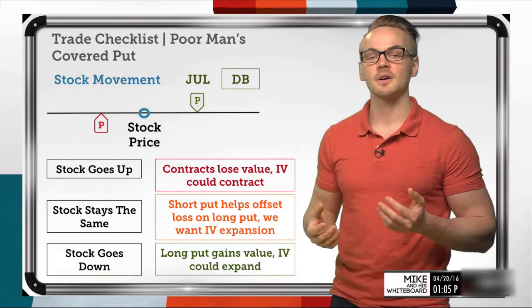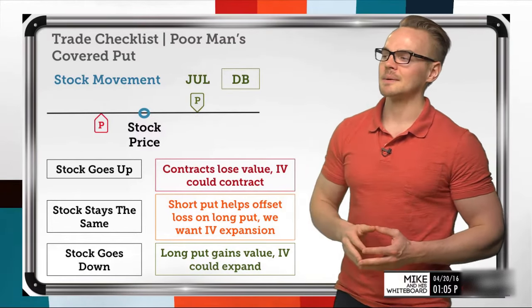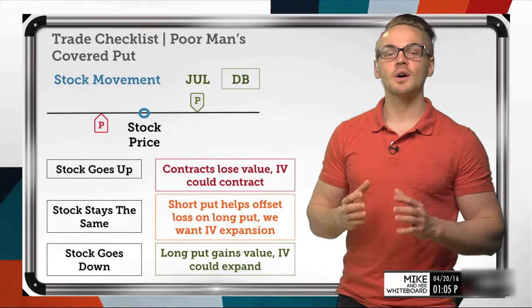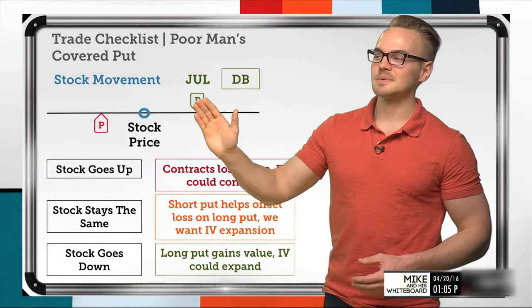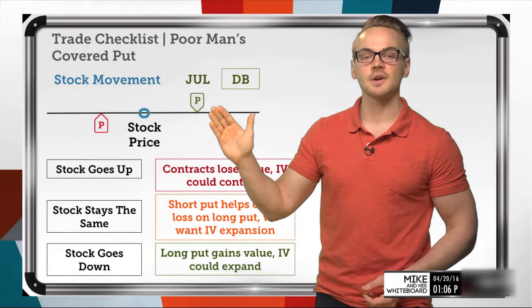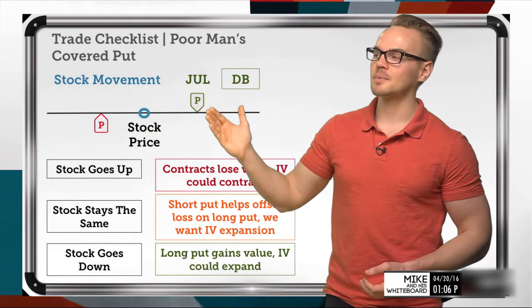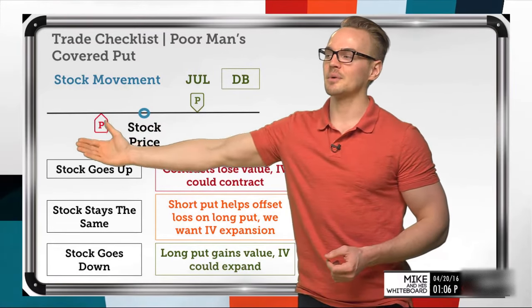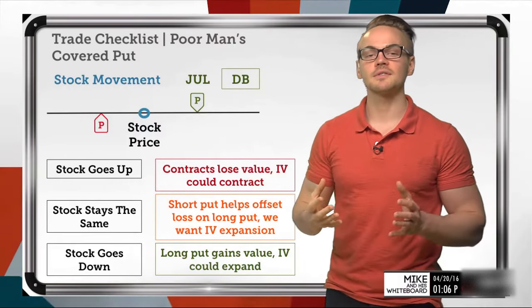The S&Ps are at 2100 and the VIX is right around 12, which is very low. On the flip side, when the stock goes down, we're going to get value in both options moving in the money, but we could also see implied volatility increase. Our long put would gain value as it moves more and more in the money. And even though we would see potential losses on our short put, our long put is going to completely offset any intrinsic value losses on that short put — so it's totally offset in terms of intrinsic value.